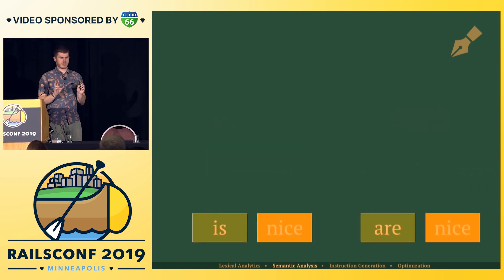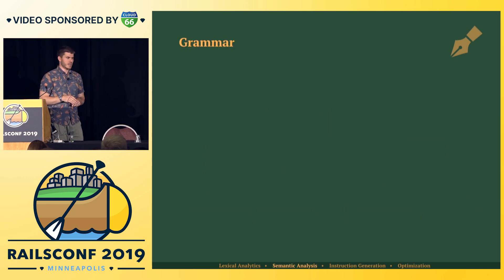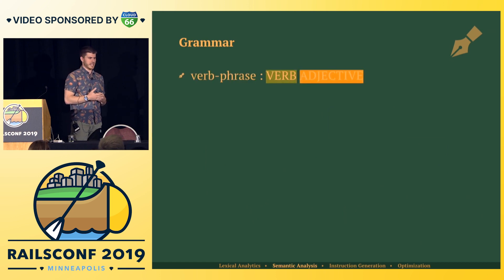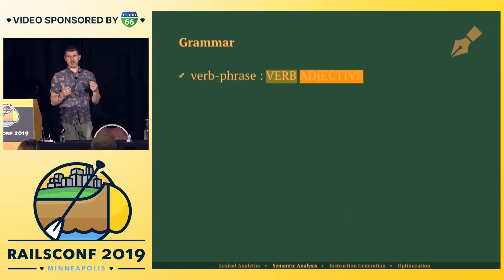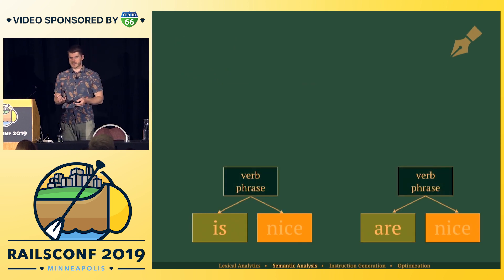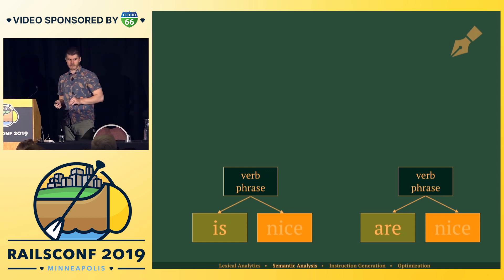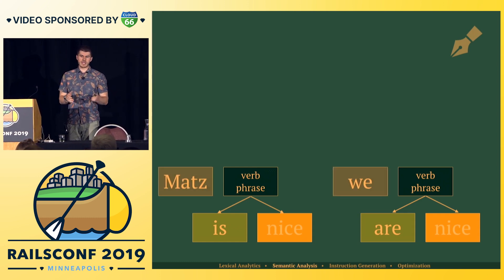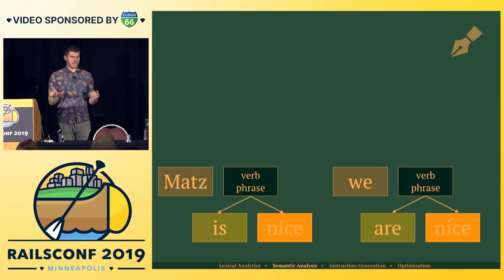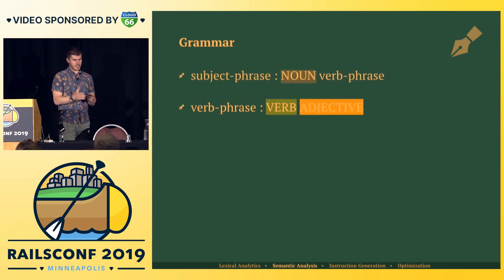If we look at the verb and the adjective, we need a name for this section — we're going to call it a verb phrase. The pattern can be 'verb adjective,' so we have a verb phrase. Then if we add 'Mats,' we have a noun, and we need a name for this kind of thing as well. We extend our grammar and say a noun followed by a verb phrase is going to be called a subject phrase.